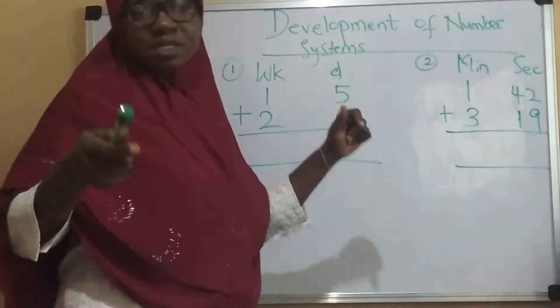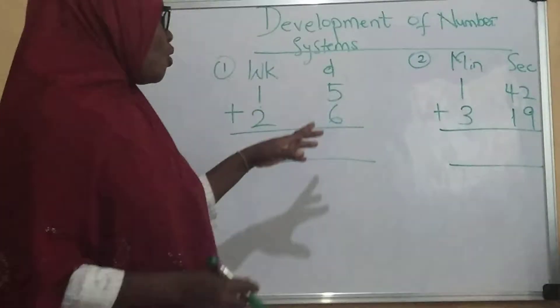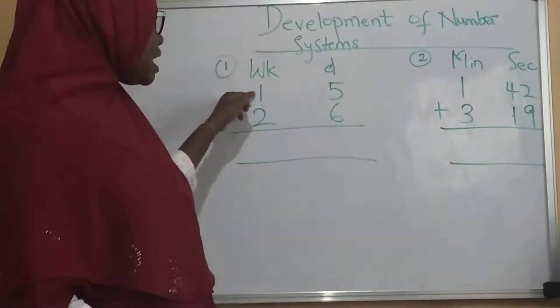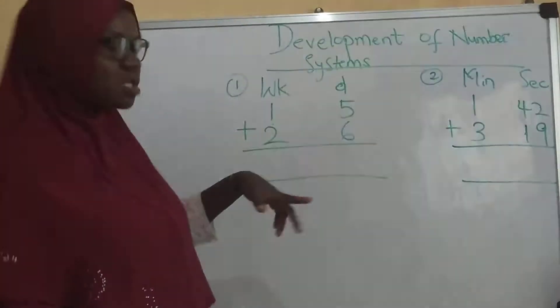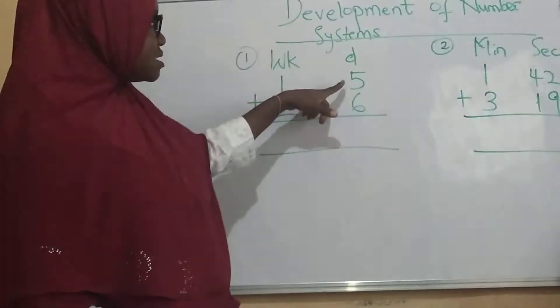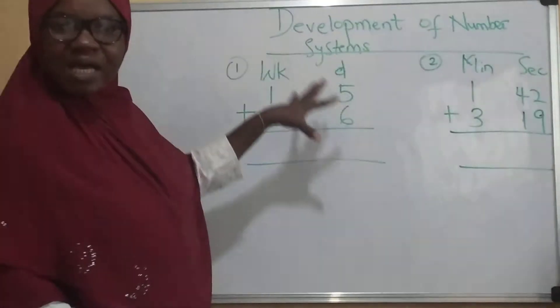Please come along with me while I explain it to you. So now today I have one week plus five days. No, I have one week, five days plus two weeks, six days. So let's see how we can add it together.